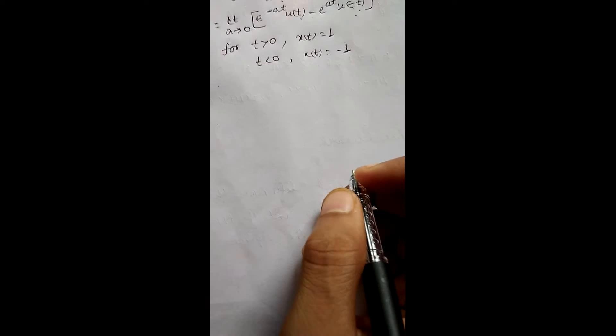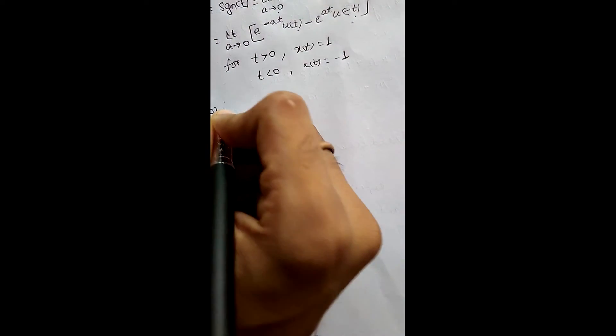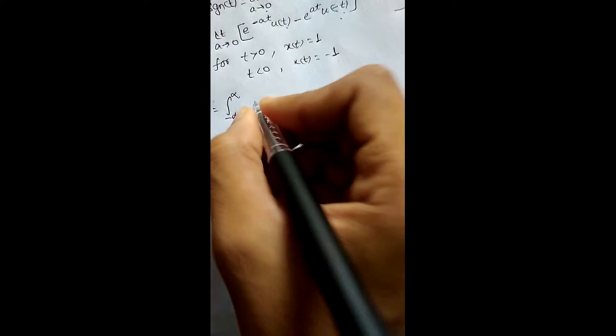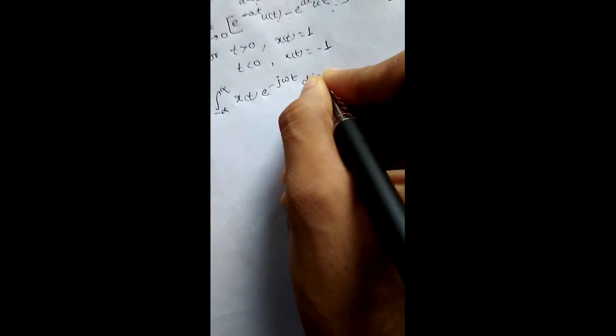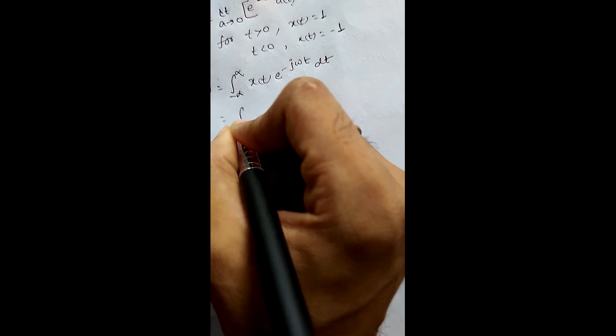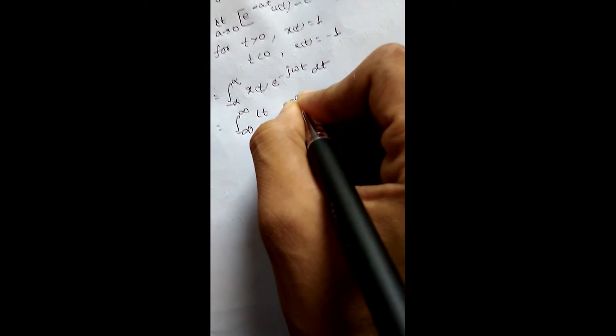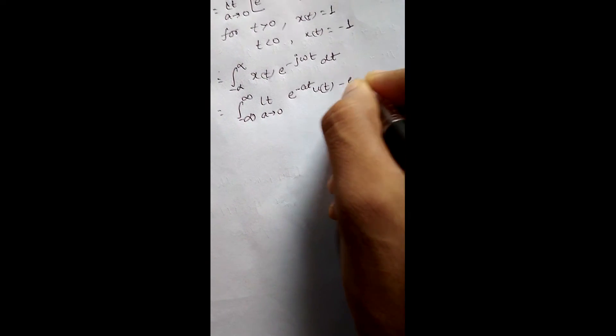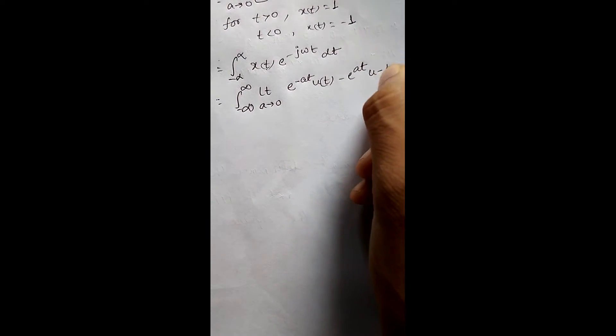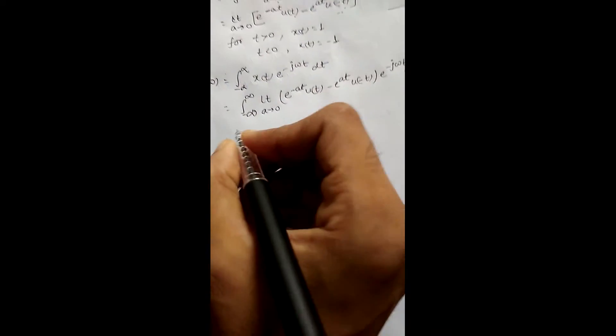Now for finding the Fourier transform, let us apply the general formula: X(ω) equals the integration from minus infinity to infinity of x(t) times e to the power minus jωt dt. In place of x(t) we write the limit as a tends to 0 of e to the power minus at times u(t) minus e to the power minus at times u(minus t), times e to the power minus jωt dt.